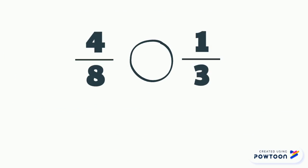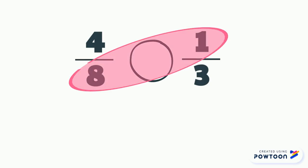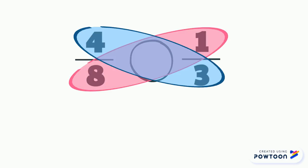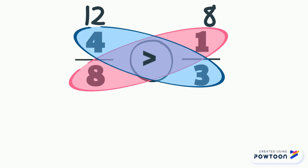Hopefully, your comparison looked something like this. You circled the eight and the one, then circled the four and the three. Eight times one equals eight, and four times three equals twelve. Twelve is greater than eight, so four-eighths is greater than one-third.